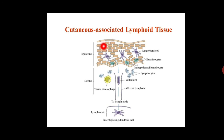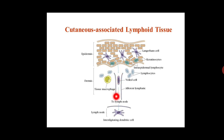This is a diagram of cutaneous associated lymphoid tissue in which the brown brick-shaped cells are keratinocytes. The Langerhans cells and green oval-shaped cells are intraepidermal lymphocytes. These Langerhans cells can migrate to the local lymph node via the afferent lymphatic vessel to differentiate into interdigitating dendritic cells. That's all for today.